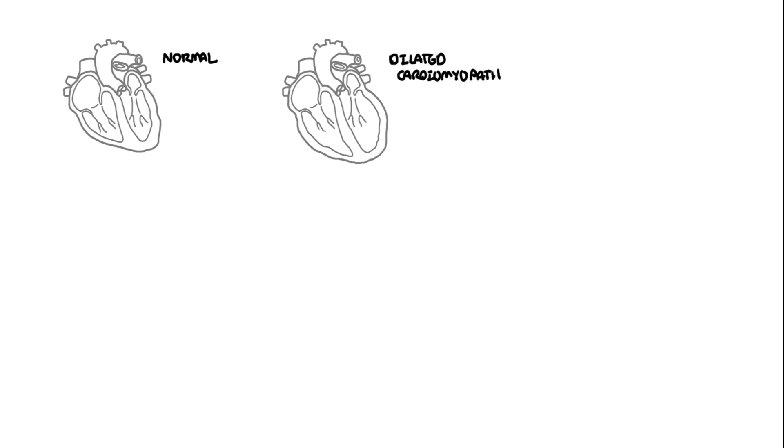Cardiomyopathies are diseases of the heart muscle causing them to become abnormal enough to lead to heart impairment. There are many types, but they can be neatly divided into five main types based on anatomy and physiology. The most common is dilated cardiomyopathy — dilatation of the ventricles — which makes the cardiac muscle cells weak and impairs cardiac contractility and systolic function.